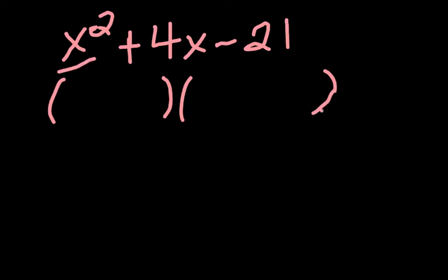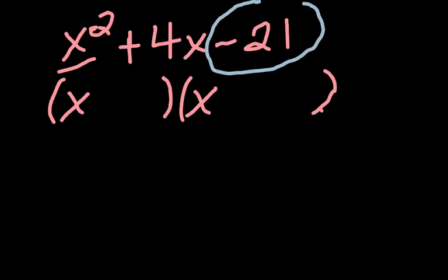So since you have an x squared, you're going to put an x as the first term. Then the next thing that you're going to do, you're going to look at that negative 21 and try and figure out what terms can you multiply together to get negative 21. Or a better way to put it is, what two integers can you multiply together to get negative 21?